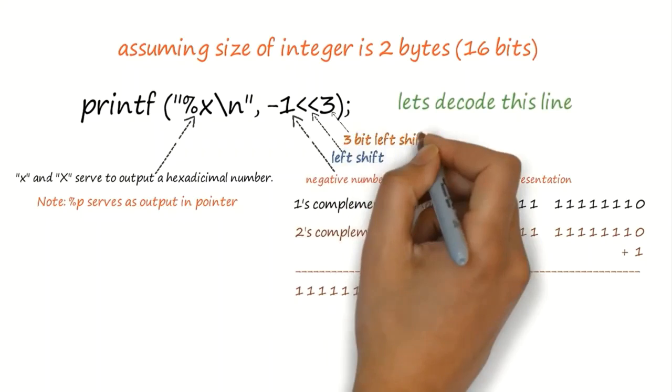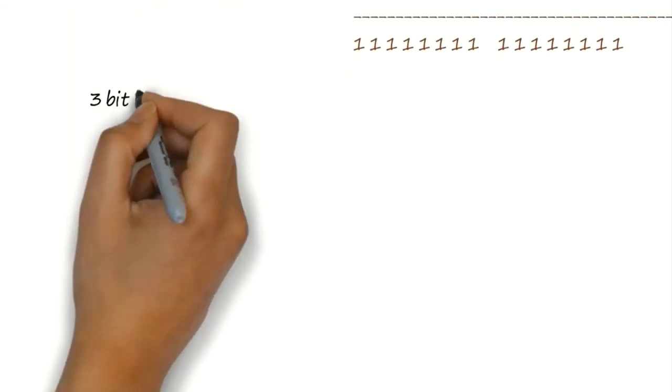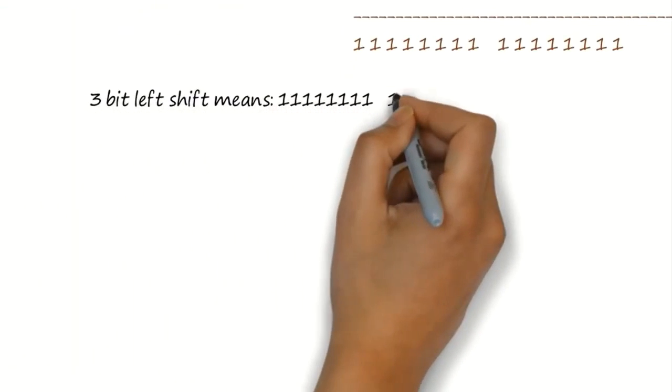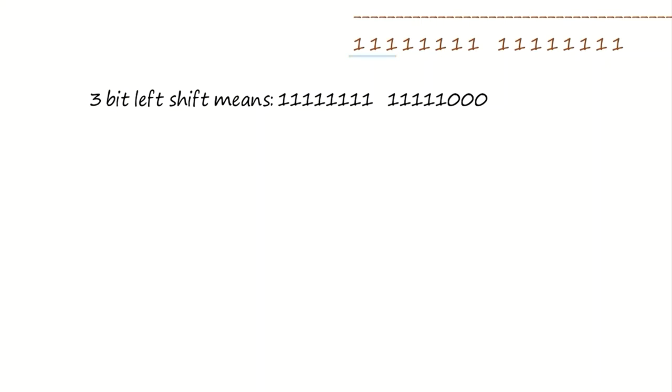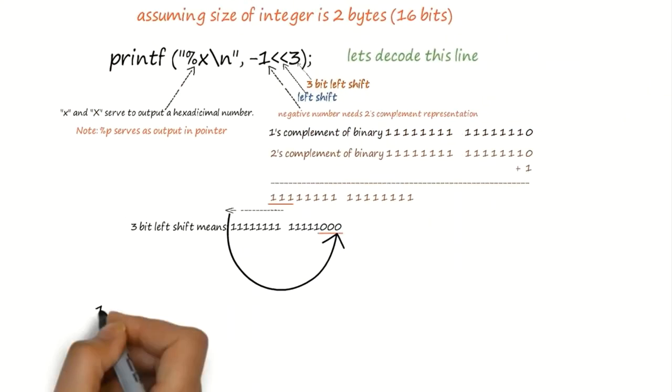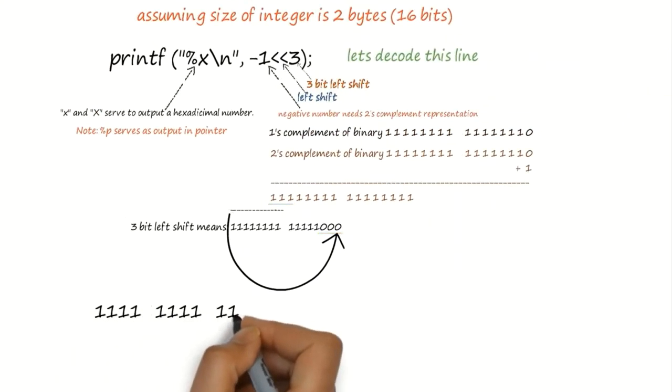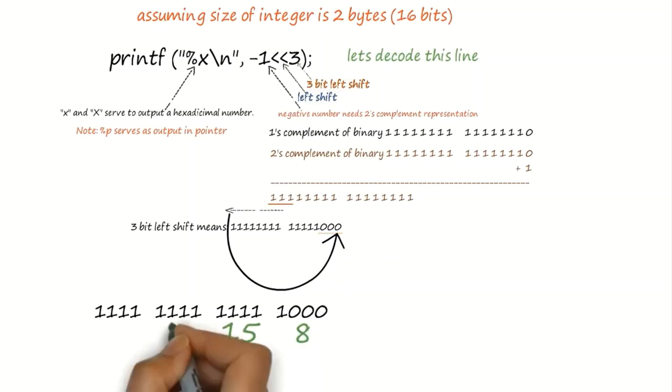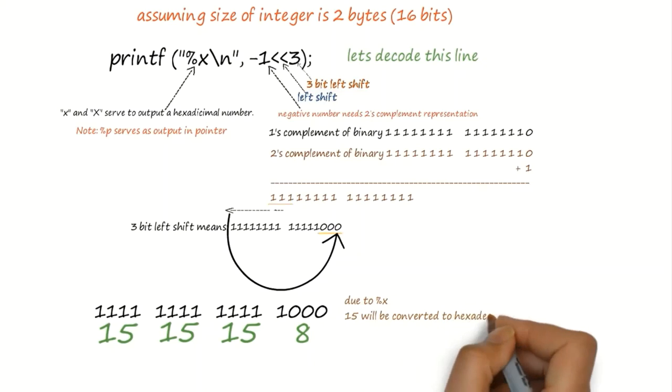So, 3 ones will be shifted at left. At the same time, 3 zeros will be appended at right. Since hexadecimal number representation uses 4 bits, we have to split the 16-bit number from right to left by 4 bits. And here is the number representation: f, f, f and 8.